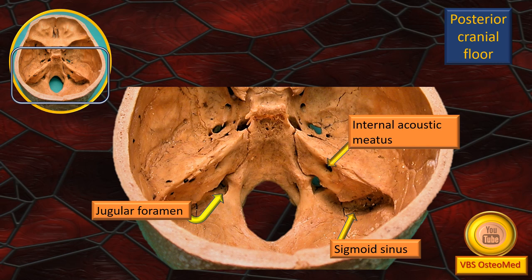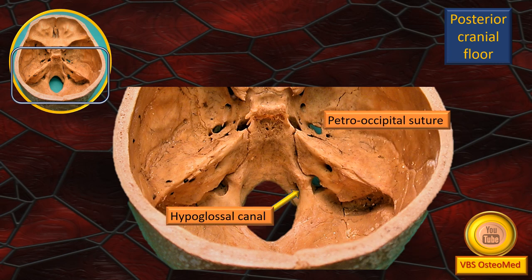Also visible is the sigmoid sinus — an S-shaped blood sinus that is a continuation of the transverse sinus — shown by a non-flashing straight arrow. Tracing it downward leads to the jugular foramen, shown by a curved arrow. A suture between the basilar part of the occipital bone and the petrous part of the temporal bone is clearly visible. Right above the foramen magnum is the hypoglossal canal, through which the hypoglossal nerve exits the cranial cavity.